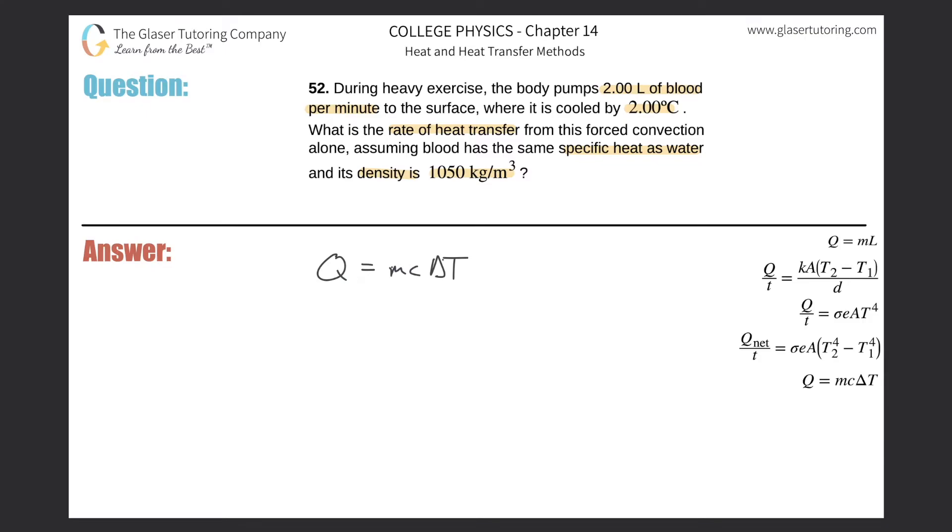And basically, we plug in what we know. So we do not know the mass, but they gave us the density and the volume. So you know that mass is equal to density times volume. So for the mass here in the formula, I'm just going to plug in density times volume. Specific heat they gave it to us, and then the change in temperature they told us was 2 degrees Celsius. So we can simply just plug it all in.